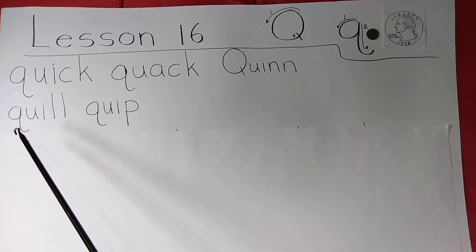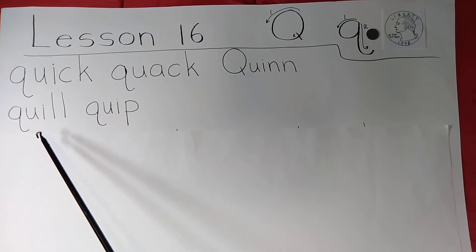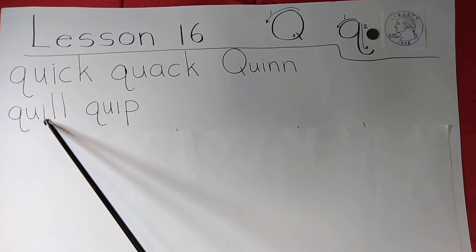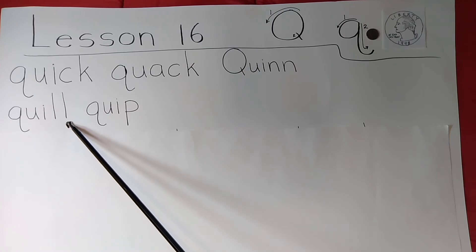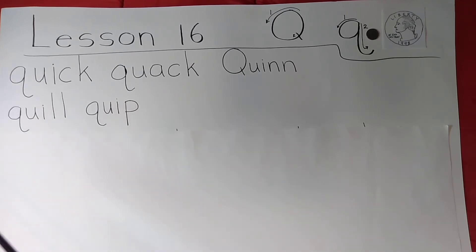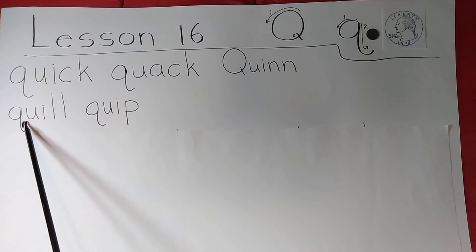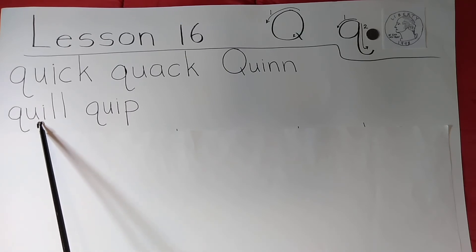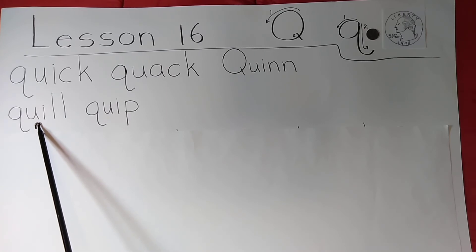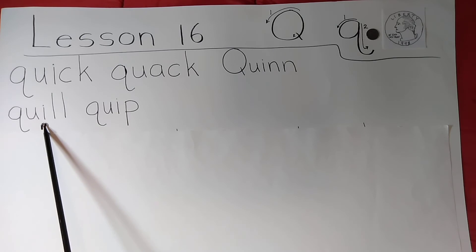Young students — maybe older students too — may not know: a quill is a type of pen that was used in the early history of our country to write with. They would take a feather, a bird feather, slice the end, dip it in ink, and be able to use it as a pen. It was called a quill pen — a feathered pen.